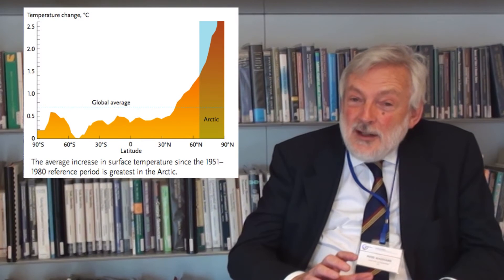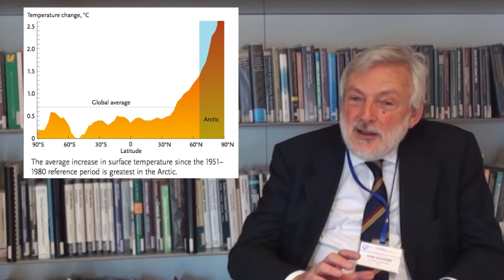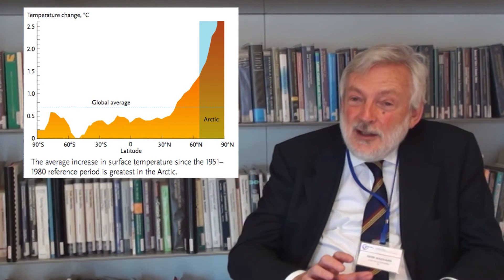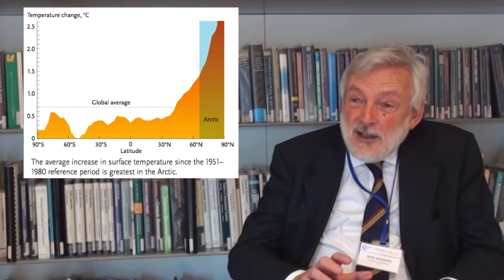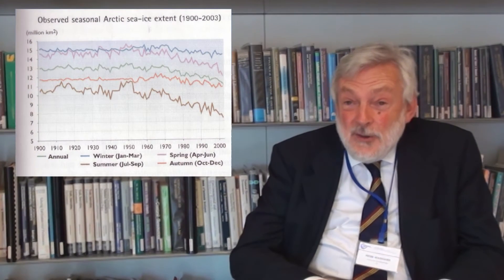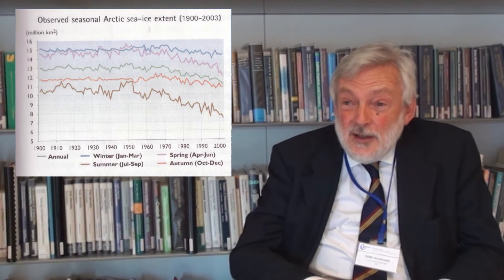Lower latitudes are all warming up quite fast, but the Arctic is warming up 2, 3, or 4 times faster. That means that all the effects we see are happening much more rapidly in the Arctic, especially the melting of ice — especially in the summer.